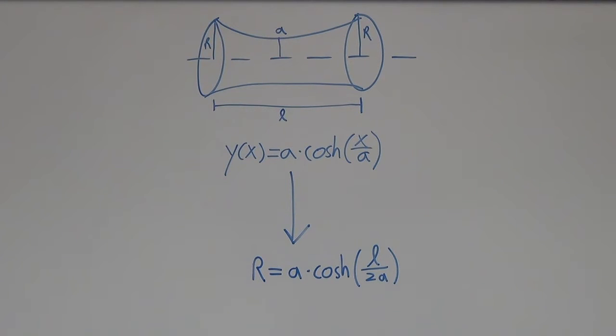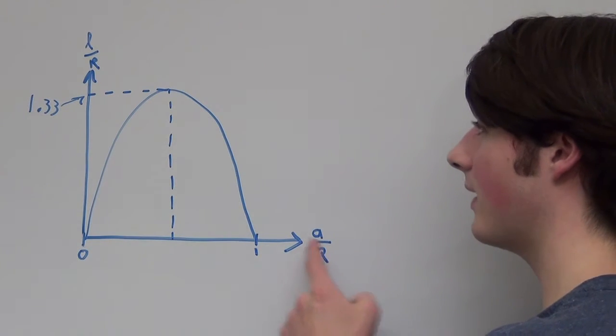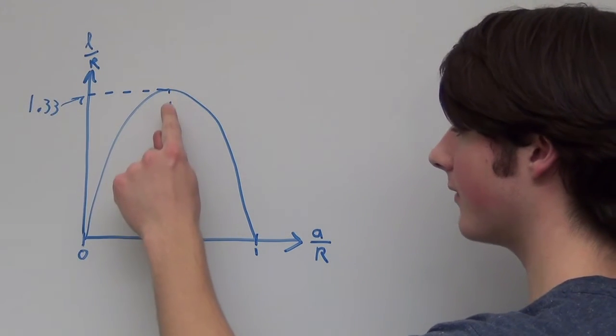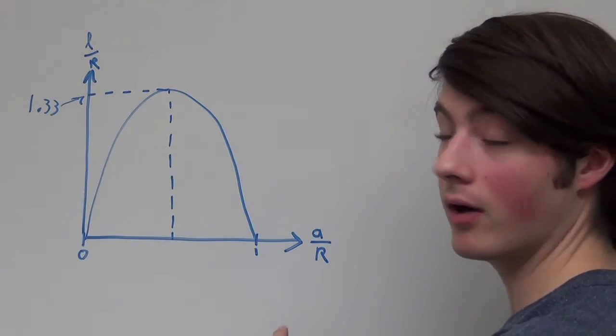Here's our graph with a as the neck radius and l as the distance between the two rings. Now we have a maximum a here as long as we hold our r's constant.